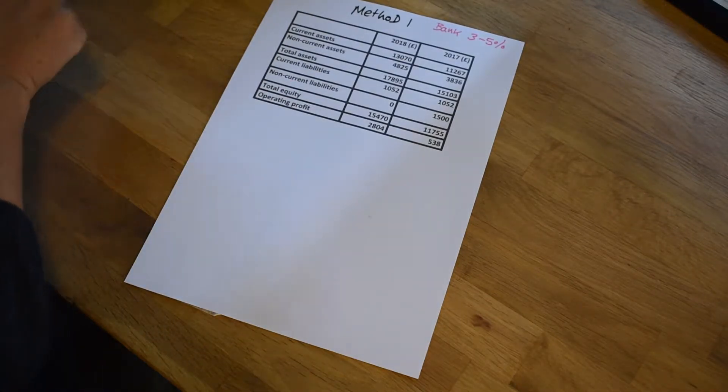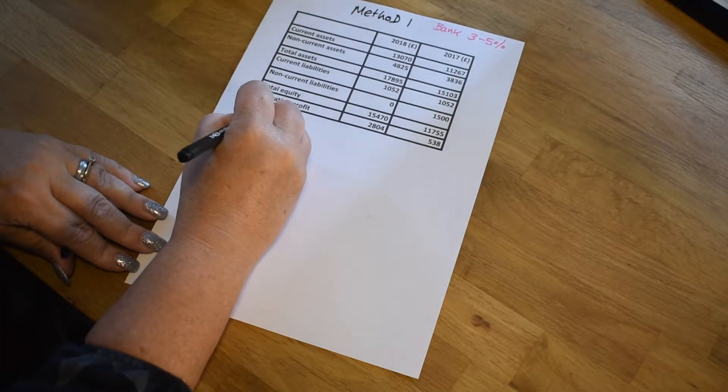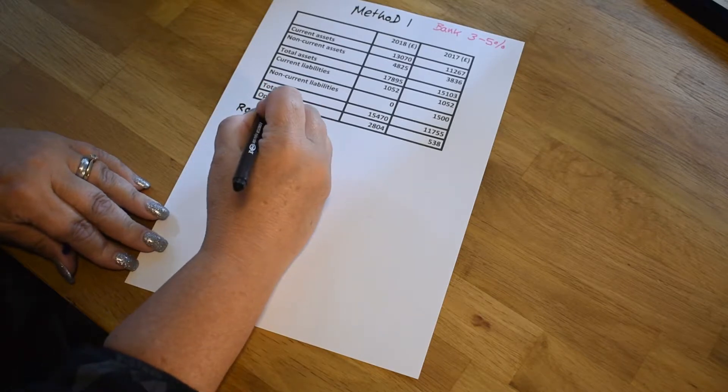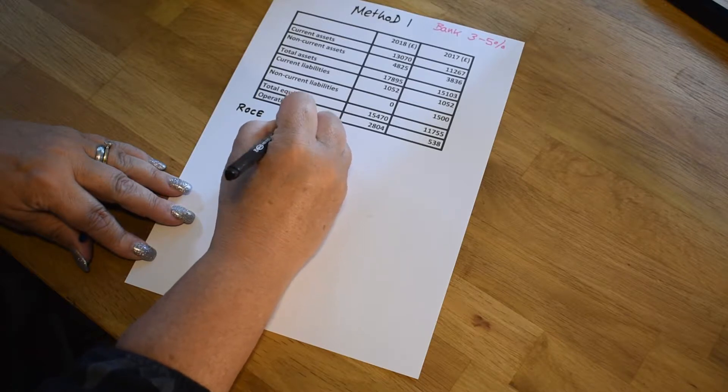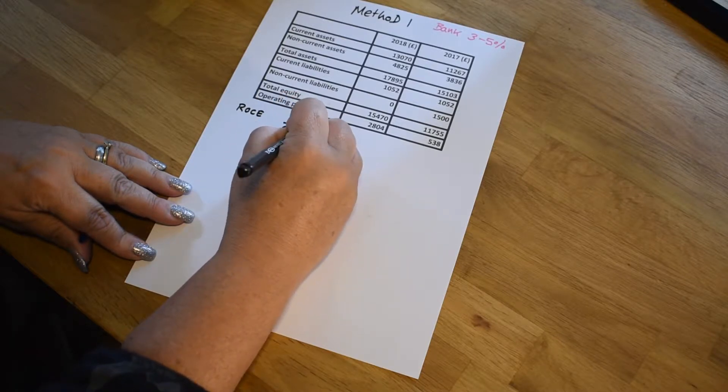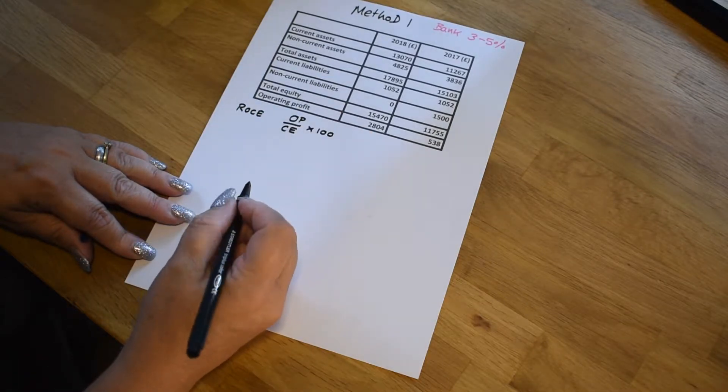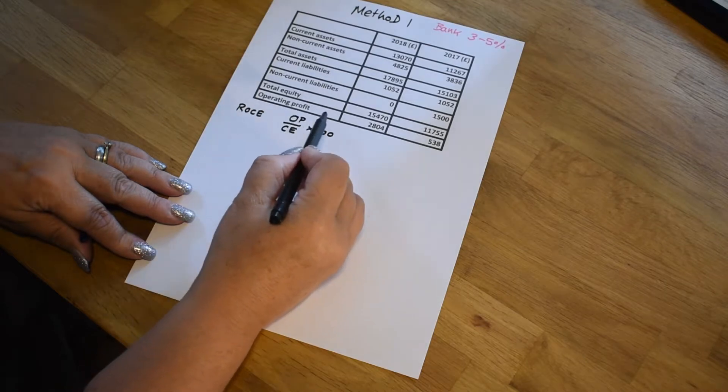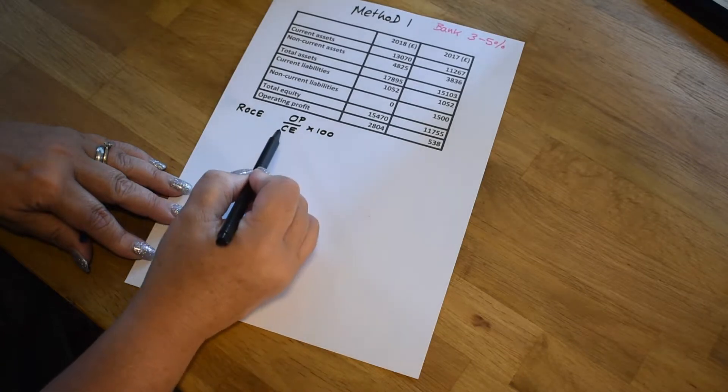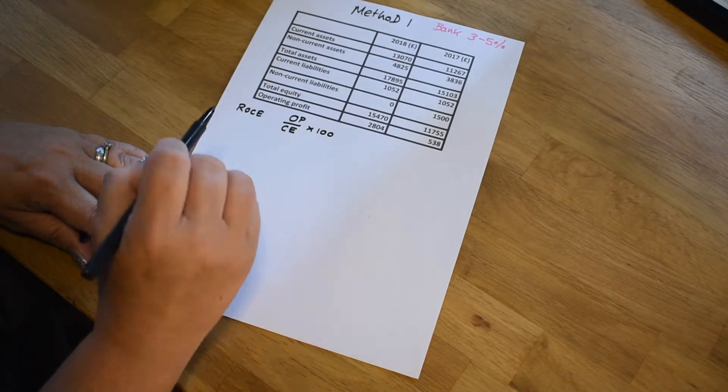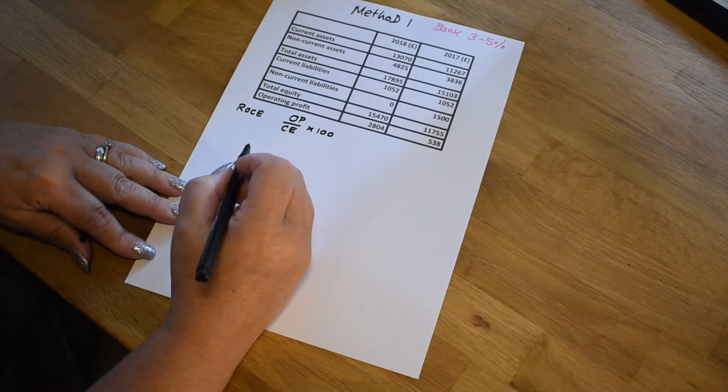Keep that in mind for both methods. Now our return on capital employed, ROCE or ROCE as it's sometimes known, the formula will stay the same for both methods. And that's the operating profit over the capital employed times 100, and that's going to give us a percentage. Now the operating profit as you can see is actually evident in your table of data in your question, but the capital employed isn't there and it's hidden a little bit. So there are two methods that you can use to find the capital employed.